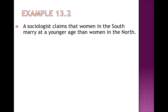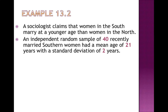We're going to go through a hypothesis test from beginning to end, and hopefully by the end you'll have a good sense of how to do a hypothesis test involving two populations. A sociologist claims that women in the South marry at a younger age than women in the North. An independent random sample of 40 recently married Southern women had a mean age of 21 and a standard deviation of two years.